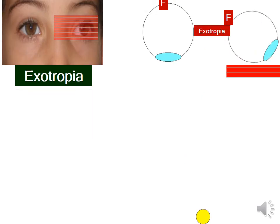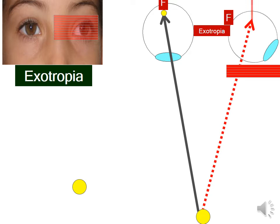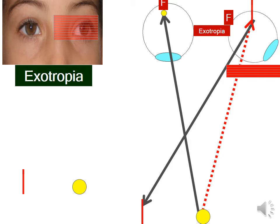On the other hand, if the patient has exotropia, the red line will fall on the temporal retina, and the patient will assume it is nasal to the spot of light. This is known as crossed diplopia, as the red line is on the side without the Maddox rod, while the spot of light is on the side of the Maddox rod.